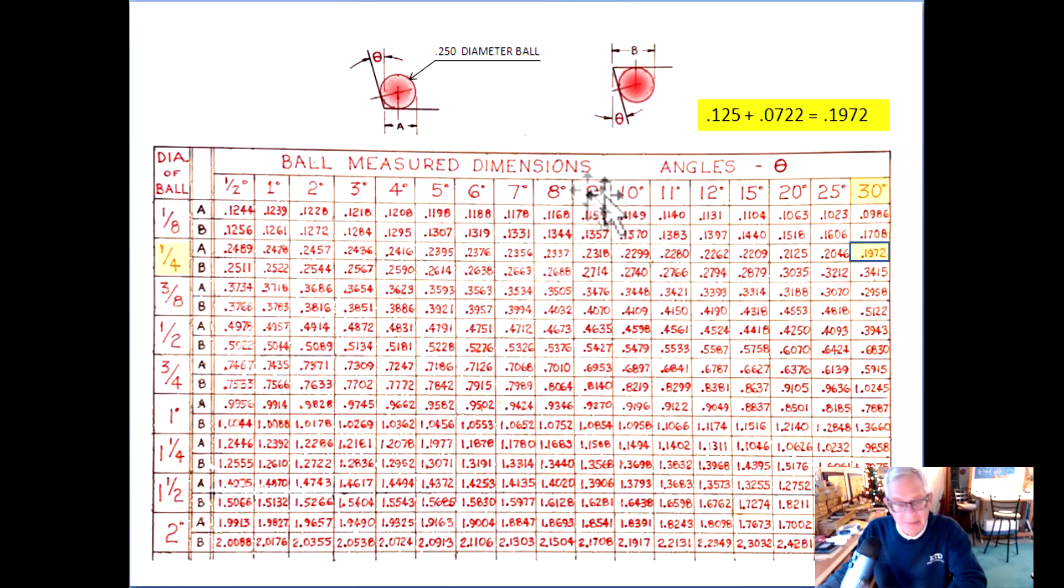Diameter ball, I'd put this on there, it's a quarter inch diameter ball. So we go here and then we want A. A for a quarter inch ball at 30 degrees is 0.1972. Well that's that eighth inch plus that 072 that we already calculated, 72 thousandths and two tenths, 197 thousandths and two tenths.